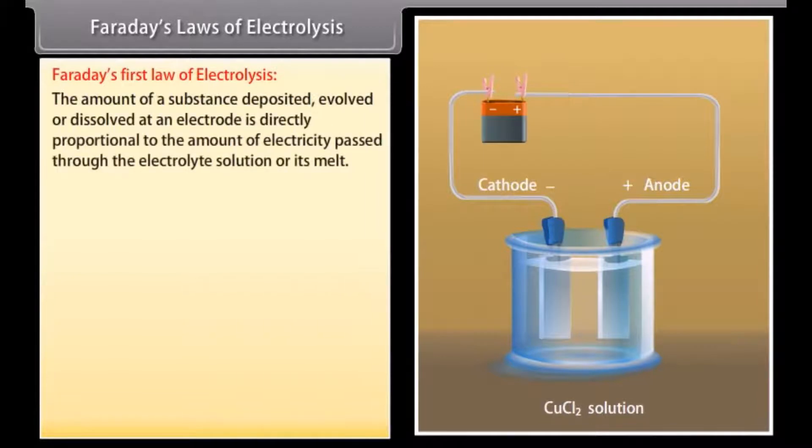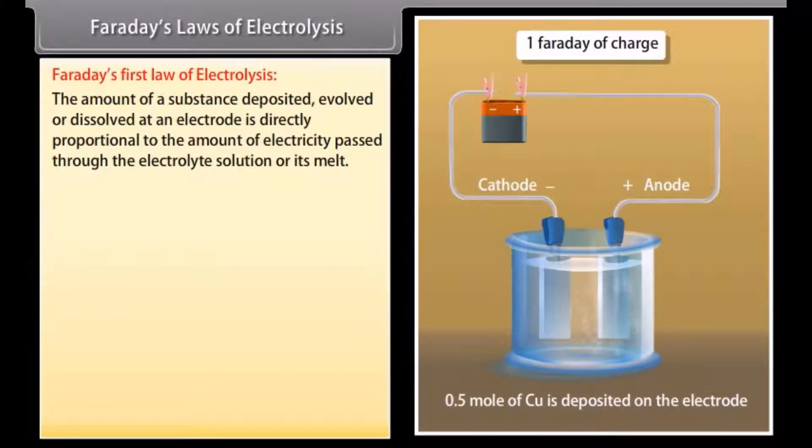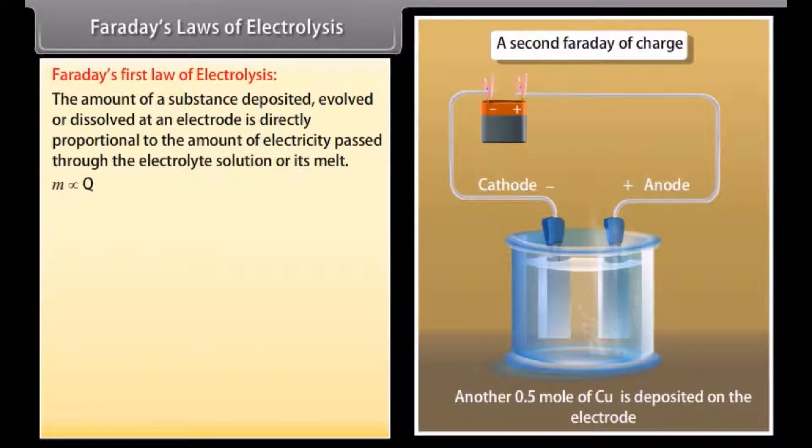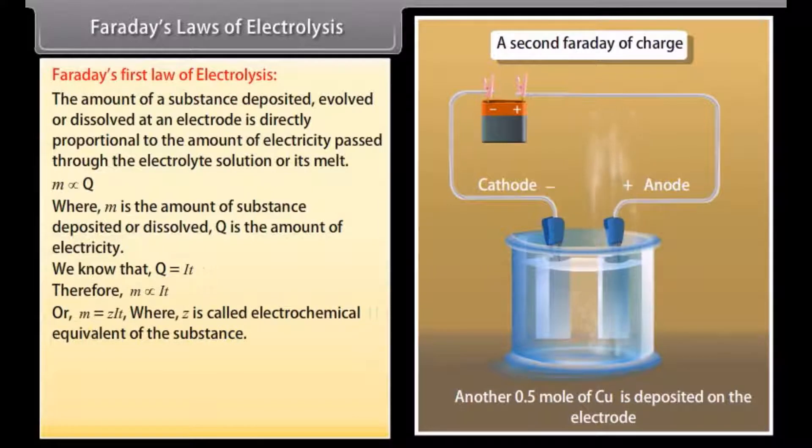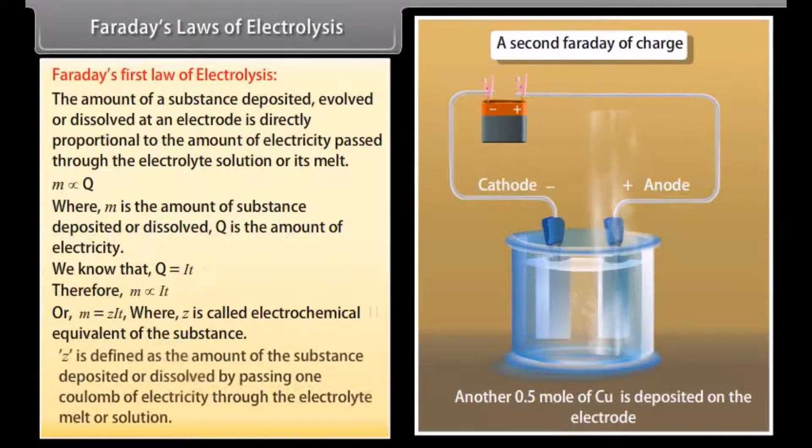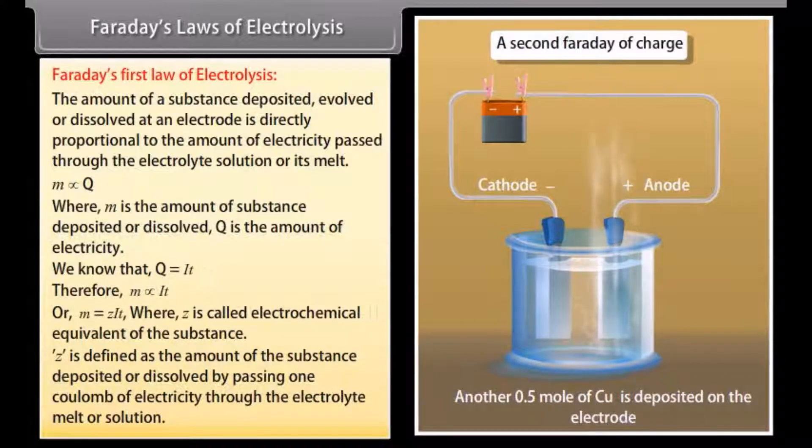Faraday's laws of electrolysis. Faraday's first law of electrolysis. The amount of a substance deposited, evolved or dissolved at an electrode is directly proportional to the amount of electricity passed through the electrolyte solution or its melt. M is directly proportional to Q, where M is the amount of substance deposited or dissolved, Q is the amount of electricity. We know that Q is equal to I T. Therefore, M is directly proportional to I T. It can be written as M is equal to Z I T, where Z is called electrochemical equivalent of the substance.